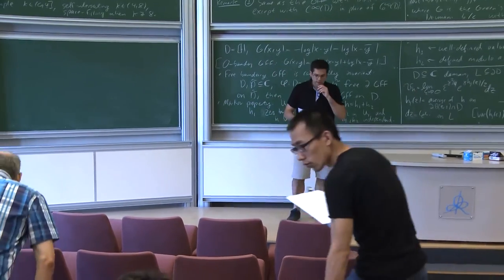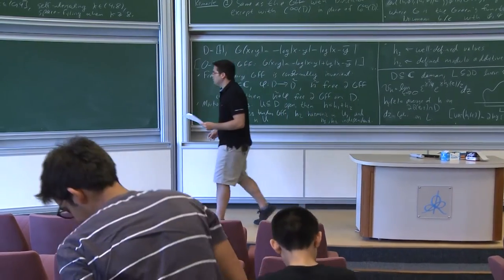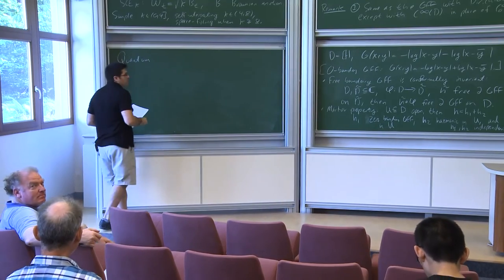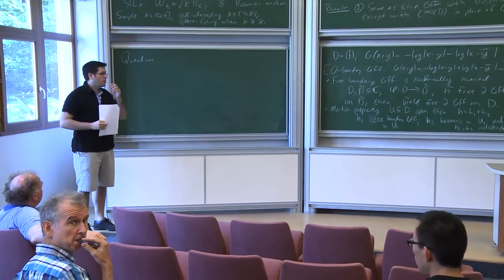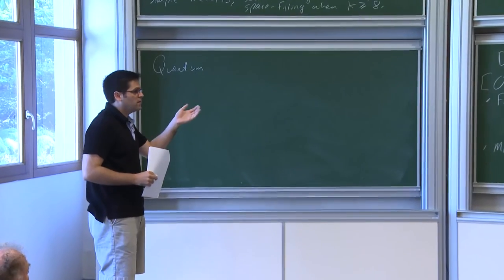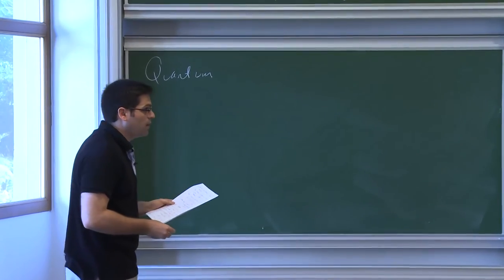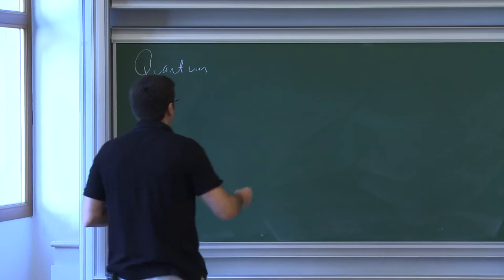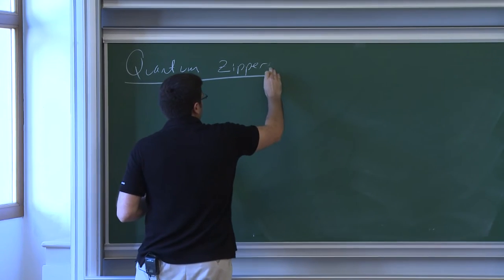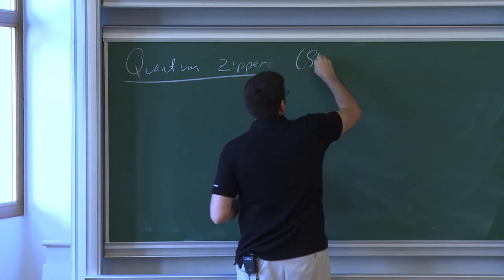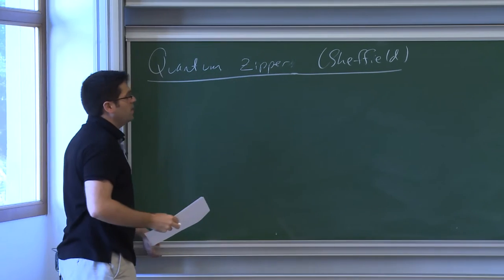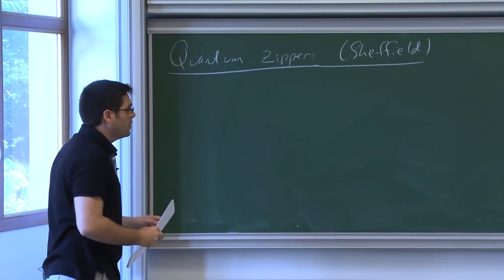Let me now get started with the main theorem. What I'm going to prove is the first connection between SLE and Liouville quantum gravity. This is going to lead to the fact that when you put an independent SLE(6) on LQG, the holes it cuts out are actually quantum disks, independent of each other. This theorem is due to Scott Sheffield and he calls it the quantum gravity zipper.